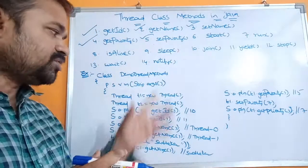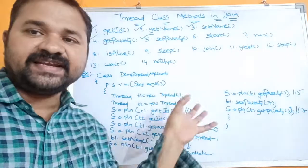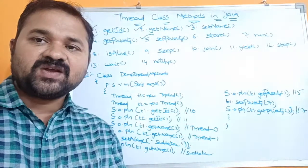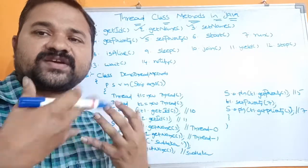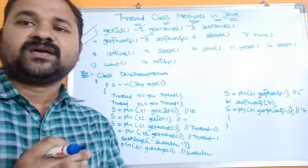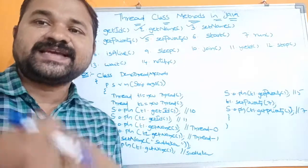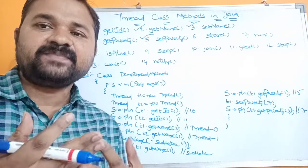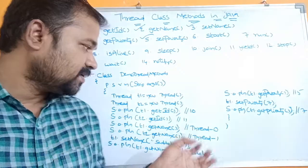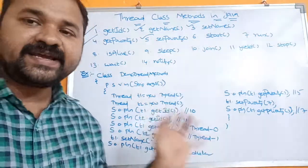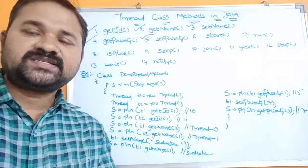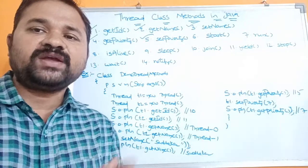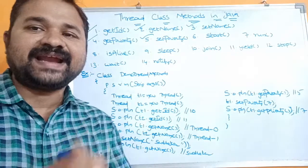No thread is defined in this class, because in this example our target is to use getId, getName, setName, getPriority, and setPriority. So for that there is no need to define any thread.